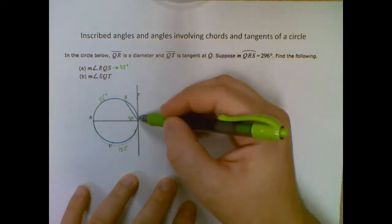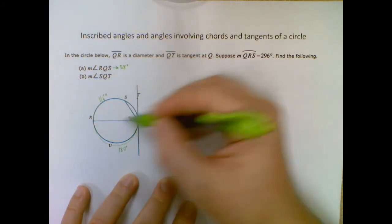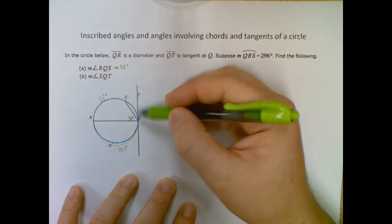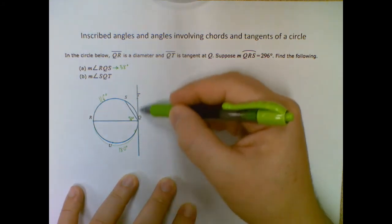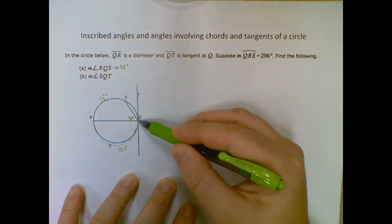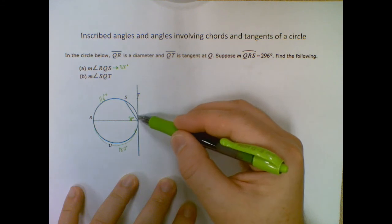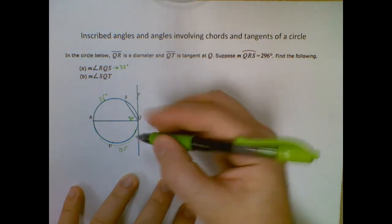So what do I know about SQt? Okay, so that is pretty much all I get from the inscribed angle part. But I know something else about this. This is tangent. And since this is a diameter, the diameter and a tangent line of a circle, if they meet at the same point, make a right angle.